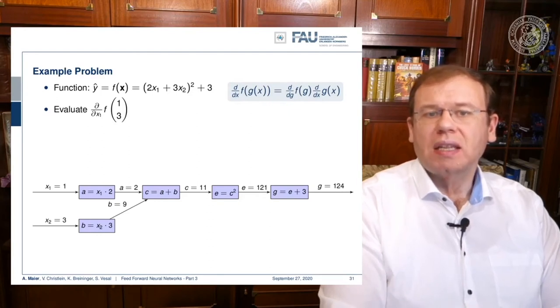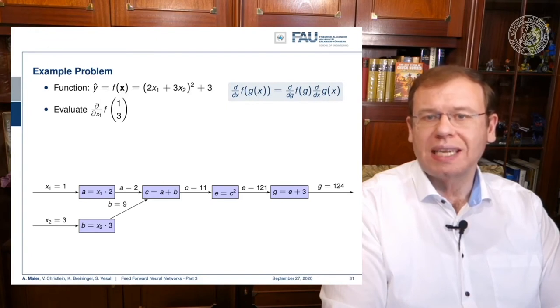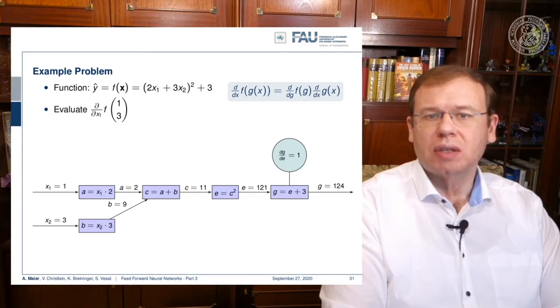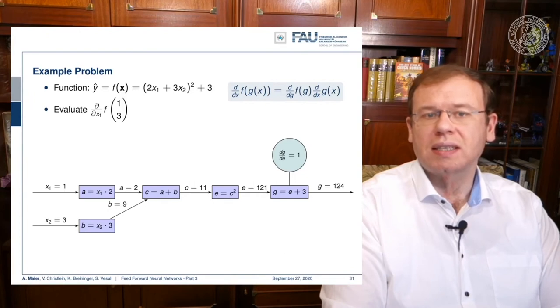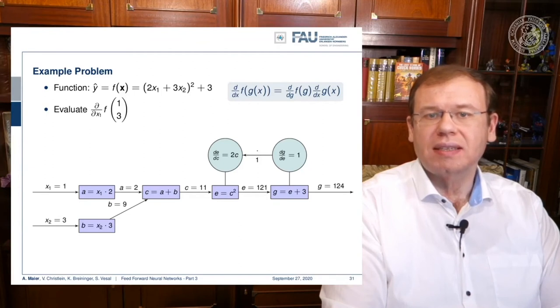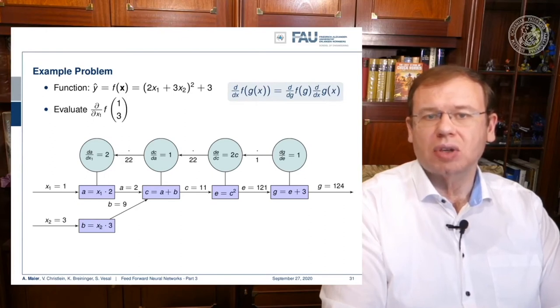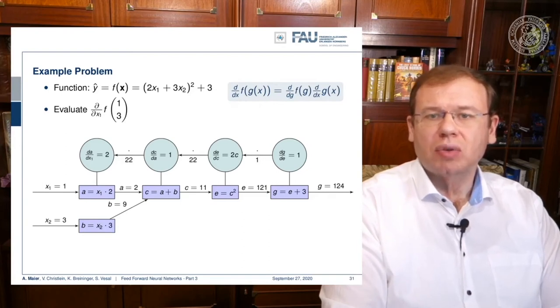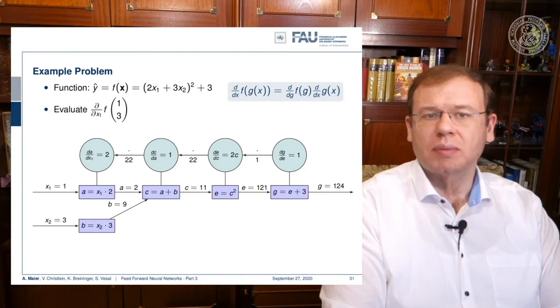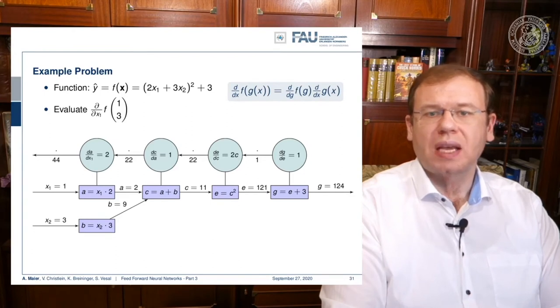Now we need to backpropagate. We need to compute the partial derivatives. The partial derivative of g with respect to e is going to be 1. Then we compute the partial derivative of e with respect to c, which is 2c. With c being 11, this evaluates to 22. Then we need the partial derivative of c with respect to a, which is again 1. Now we need the partial derivative of a with respect to x1. If you look at this block, this partial derivative is going to be 2. We have now to multiply all of the partial derivatives from right to left to get the result: 1 times 22 times 1 times 2, and this is going to be 44. So this was the backpropagation algorithm applied to our example.